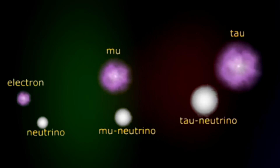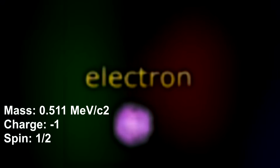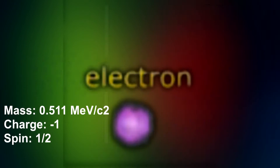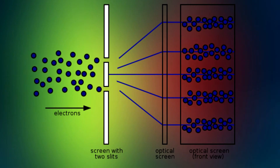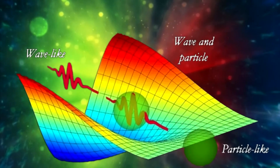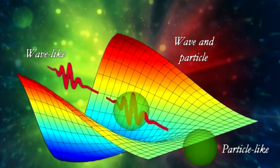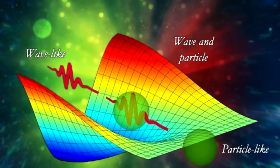Let's begin with charged leptons. Electrons can collide with other particles and pass through a narrow aperture, being diffracted as light. Because the electron has properties of both the particle and the wave, the theory of quantum mechanics comes into play.